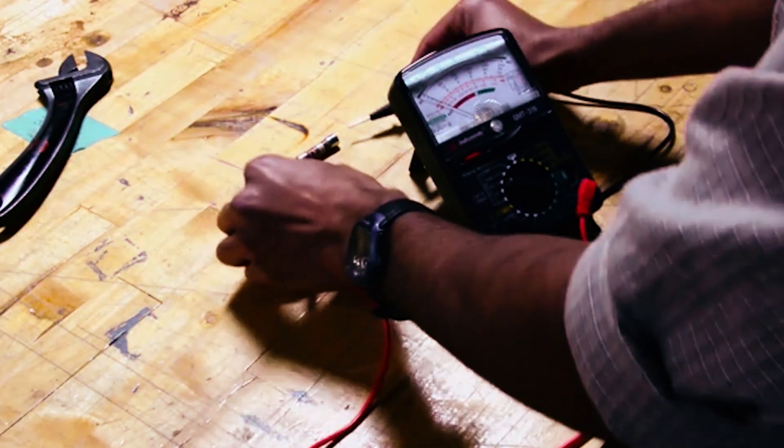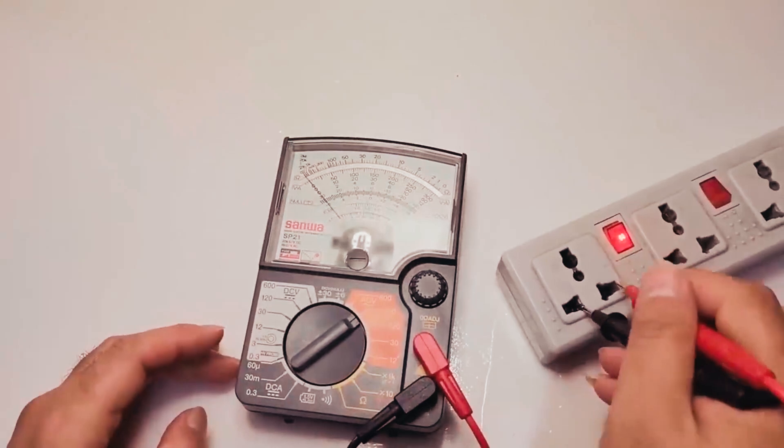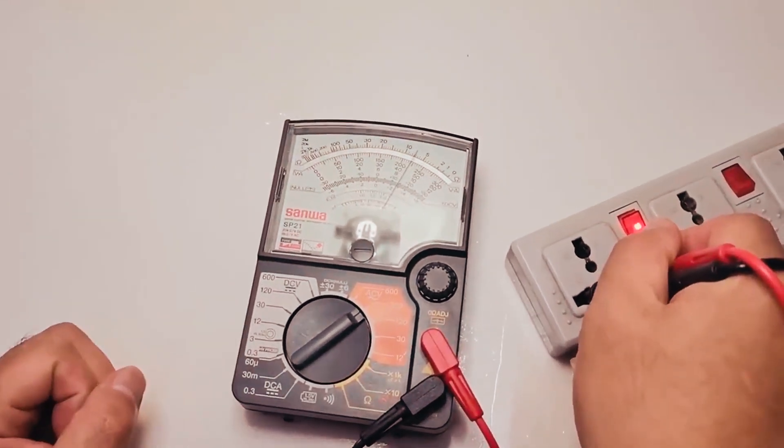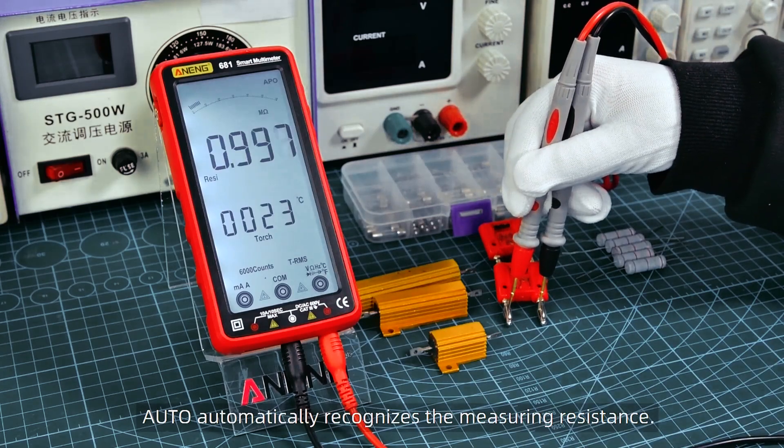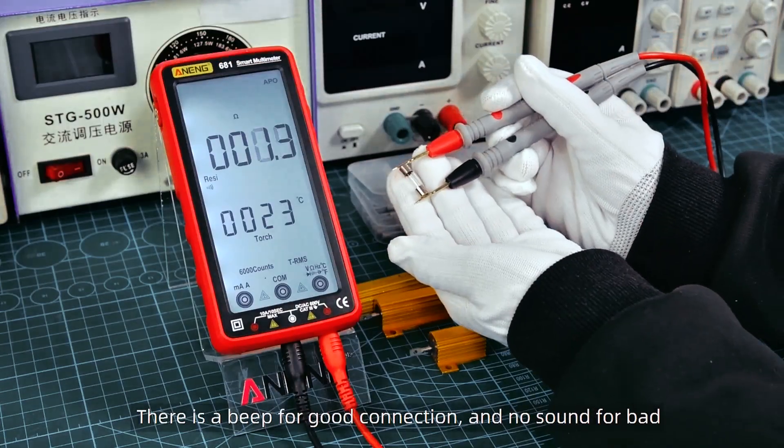But if you're experienced, you might prefer manual ranging, which gives you more control and prevents the multimeter from jumping around to different ranges. If you're not sure what the voltage will be, always start with the highest setting to avoid overloading your meter.